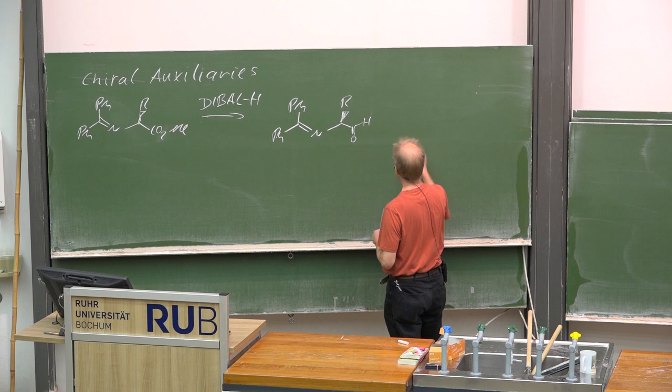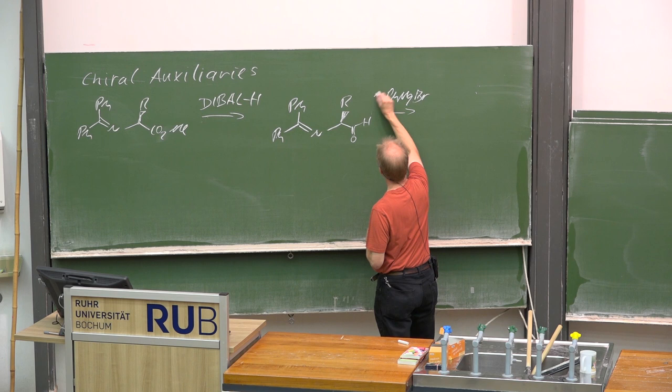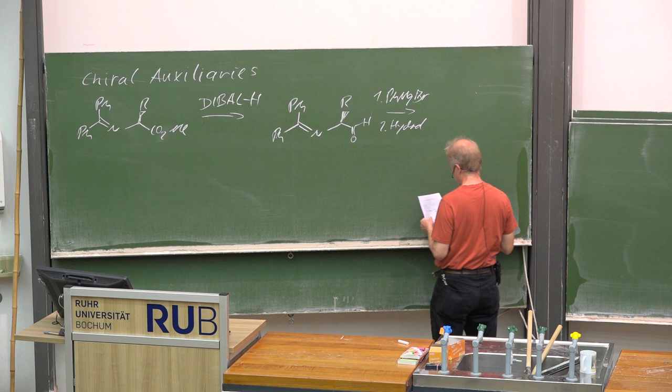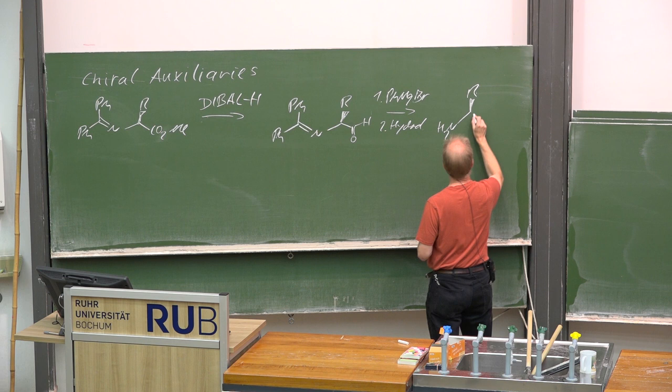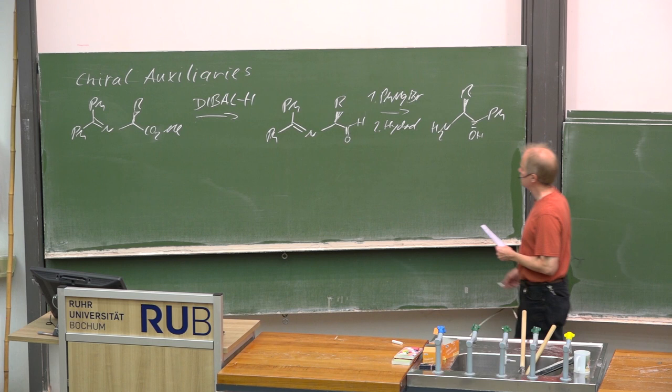And then, for instance, the phenyl magnesium bromide addition to that carbonyl group, afterwards hydrolysis, and finally you get to that chiral amino alcohol in a nice yield and good selectivity.